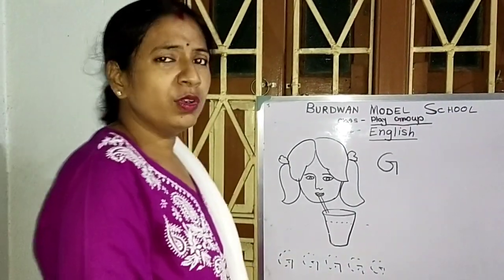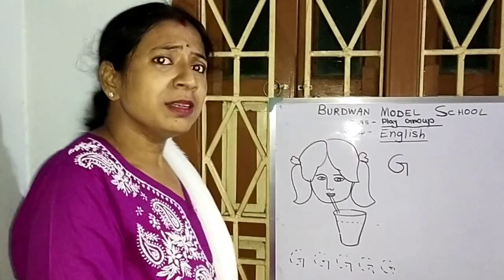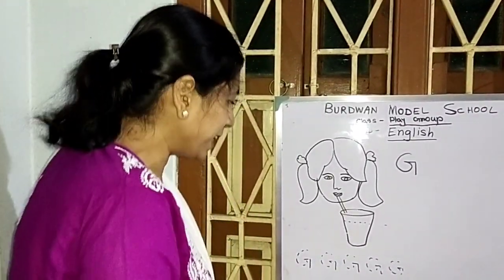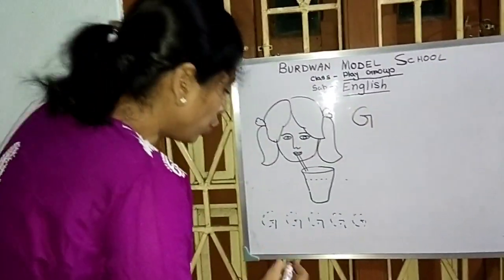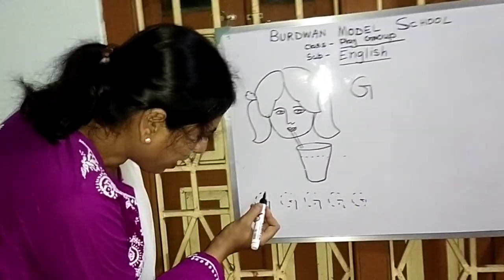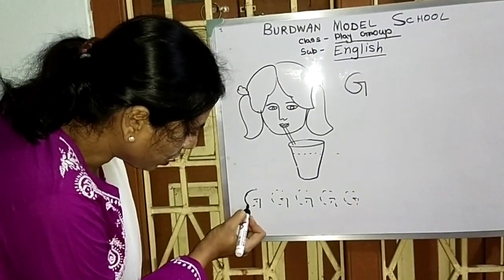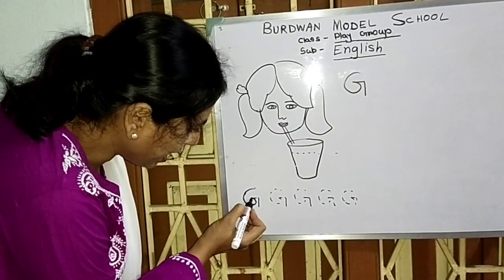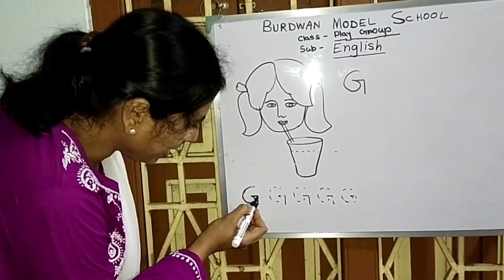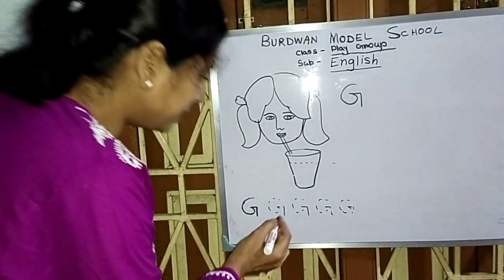Students, you know G is a little bit tough for you for writing. Let's join the dots. At first, you write C. Then this is G.